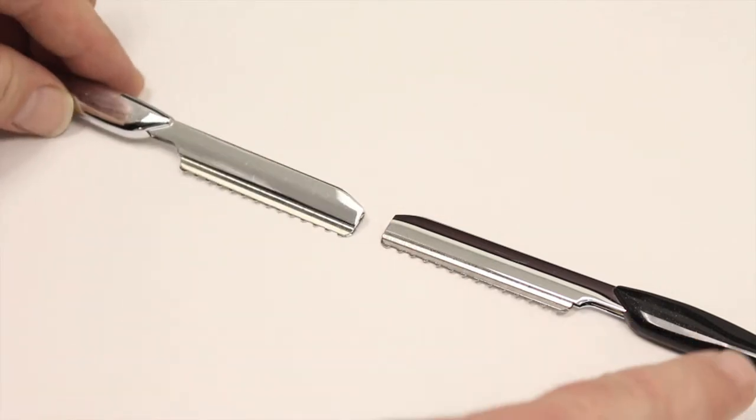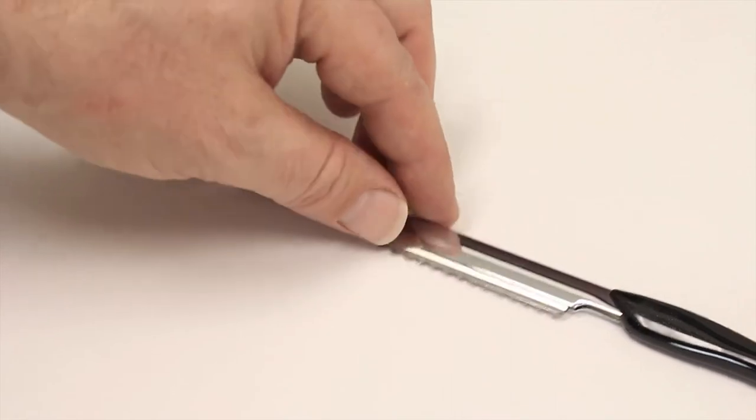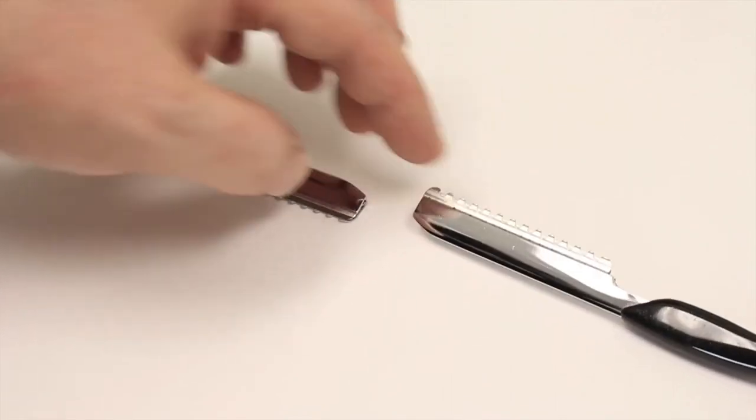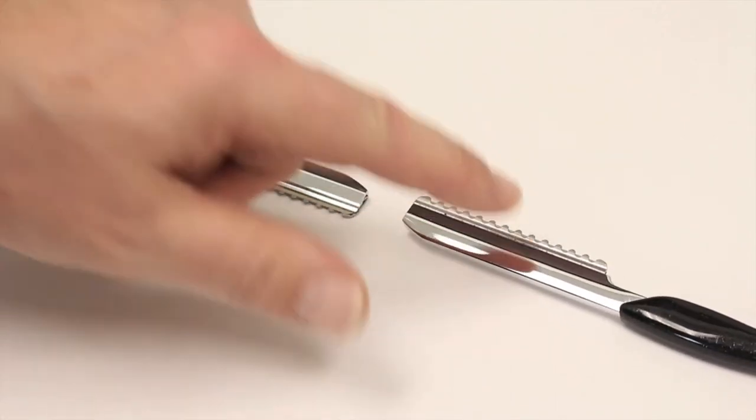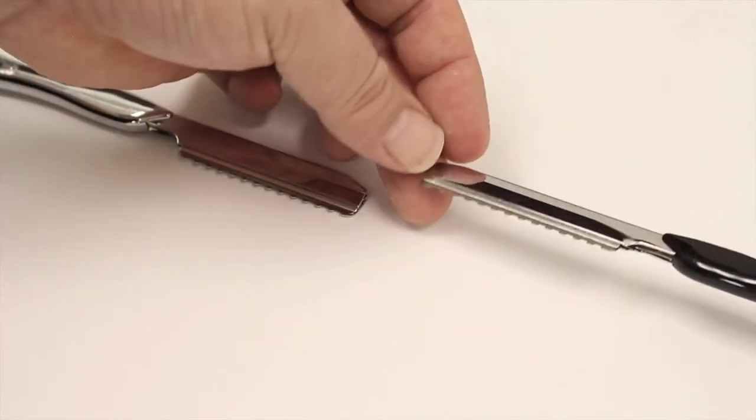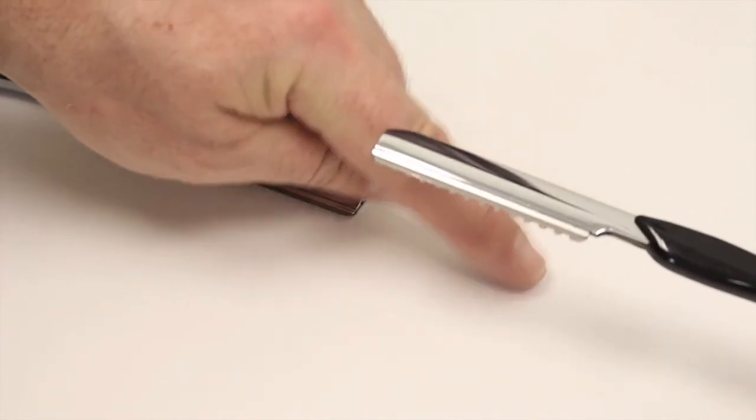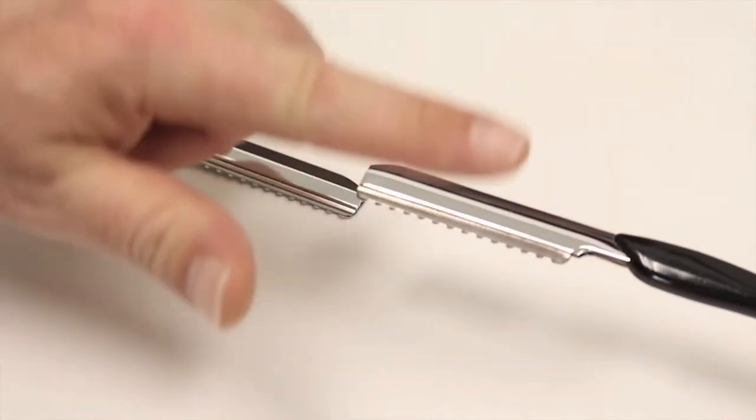So if this was used with somebody in a right hand, you can see that if we turn the razor over, you can clearly see the guard is on this side. So as the razor is turned back round, it would be hair, guard, blade.